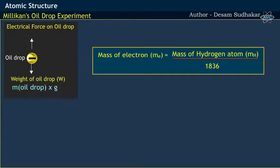It was also found that the mass of electron was about 1836 times lighter than the mass of hydrogen atom.